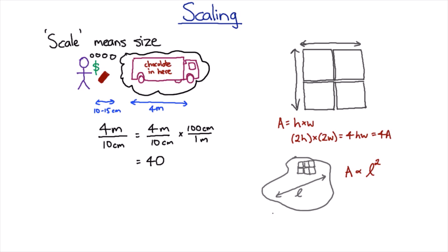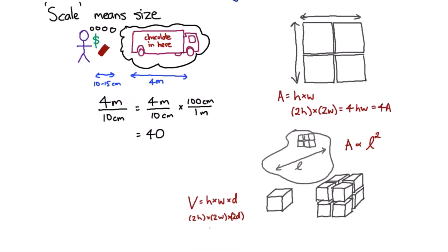Now if I take a cube and double its length, width and height, you can see that I have eight times as many cubes. And that's not surprising algebraically. We can see that if we have a volume and it's a height times a width times a depth. And if we double all of those, then we're going to end up with eight times the height times the width times the depth, which is eight times the volume.